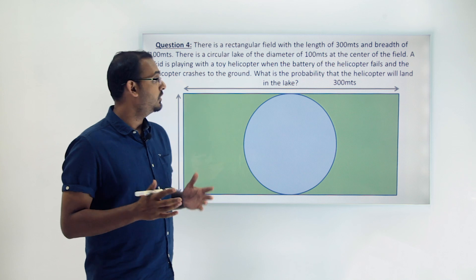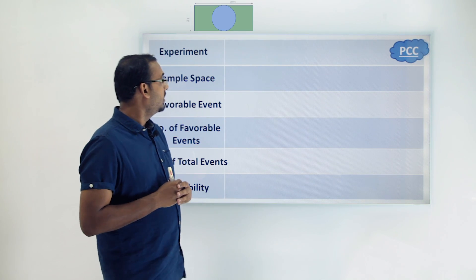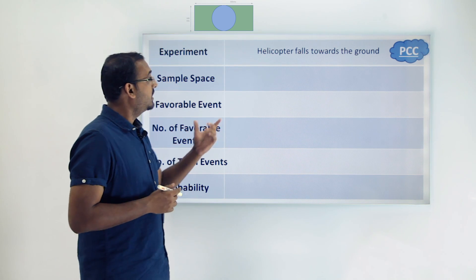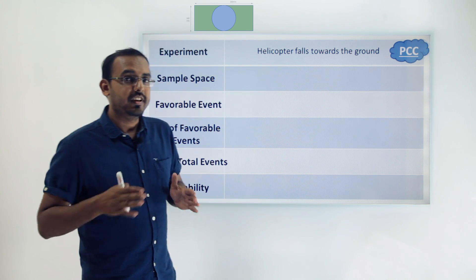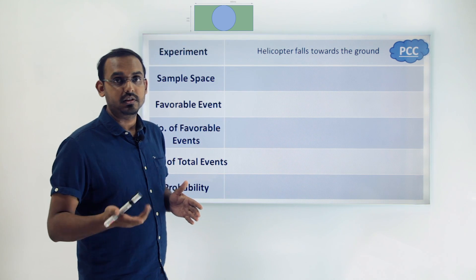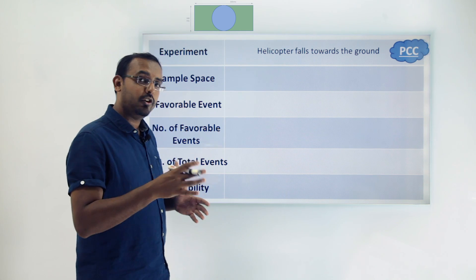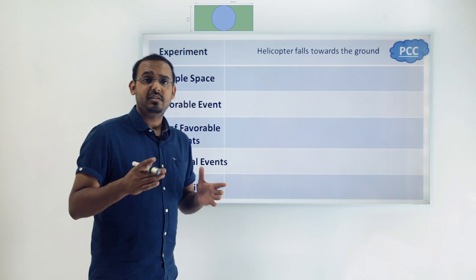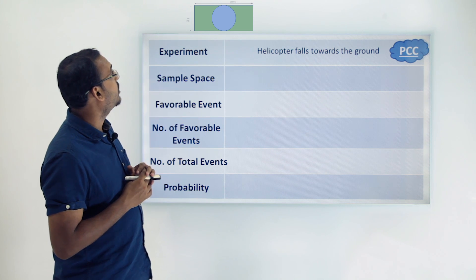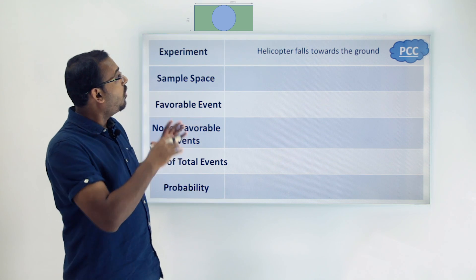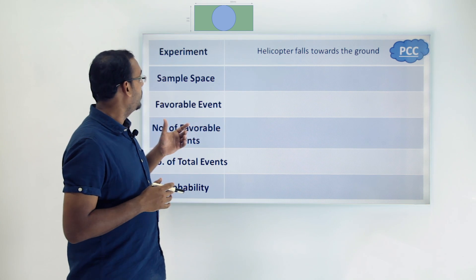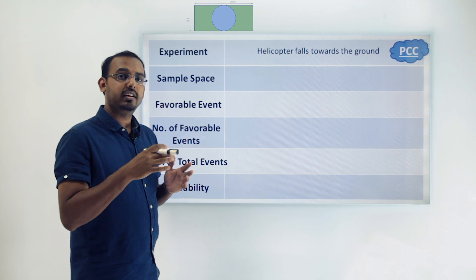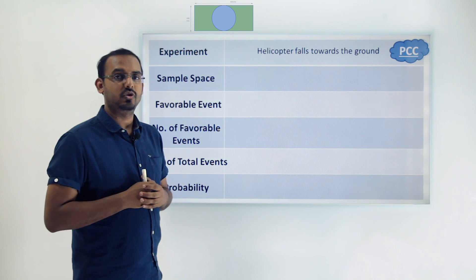Let's draw up the PCC and analyze this problem. The first thing to figure out is the experiment, which is the helicopter falling towards the ground — because we have to find the probability of where it falls. Now to calculate the sample space: logically, the sample space will be all the points present in this area, since the helicopter can fall at any point. But we cannot count all those points — that is infinite, so it's impossible to count.